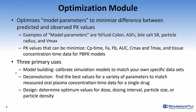Three primary uses of the optimization module are model building, deconvolution, and design. The optimization module can be used in model building to calibrate simulation models to match your own specific data sets. For example, if you had a congeneric series of compounds that had measured fraction absorbed in rat, you could use the optimization module to optimize the absorption scale factors to best fit the fraction absorbed for these molecules.